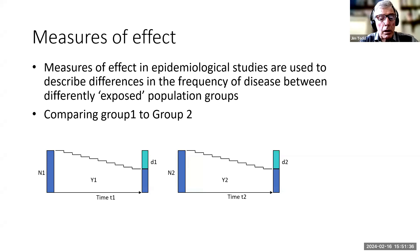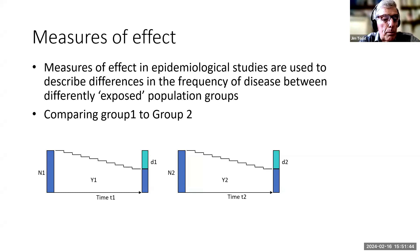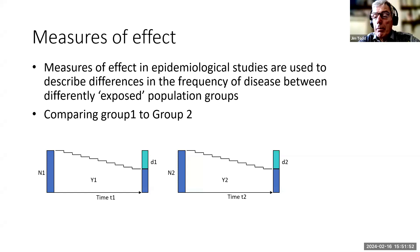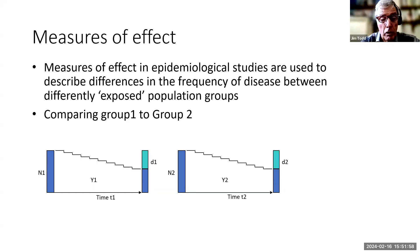So we could have two groups and look at them at the end of a particular time period. In group one, we have a prevalence which is D1 over N1, and in group two, we'll have a prevalence which is D2 over N2. We might say that one has a prevalence of 8% and the other has a prevalence of 4%, which is quite useful to describe the differences between different groups.